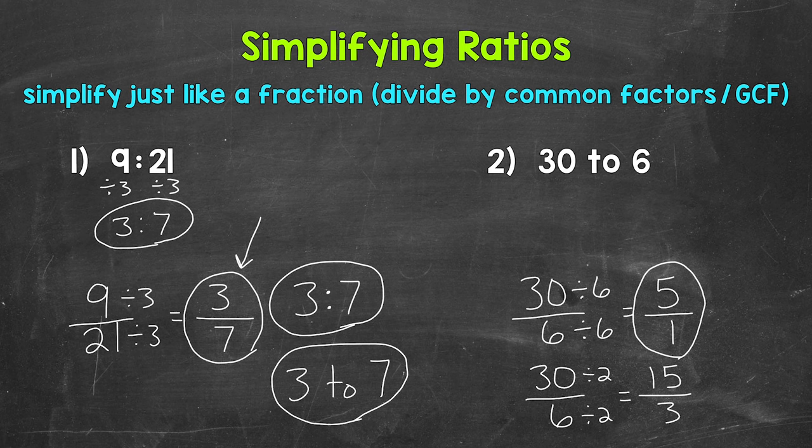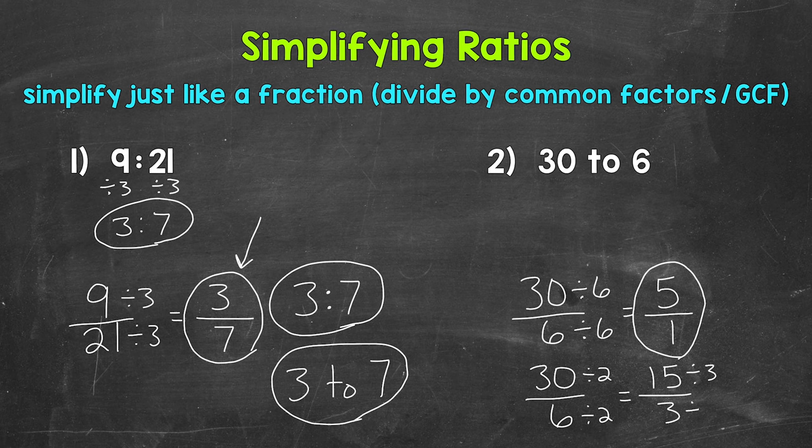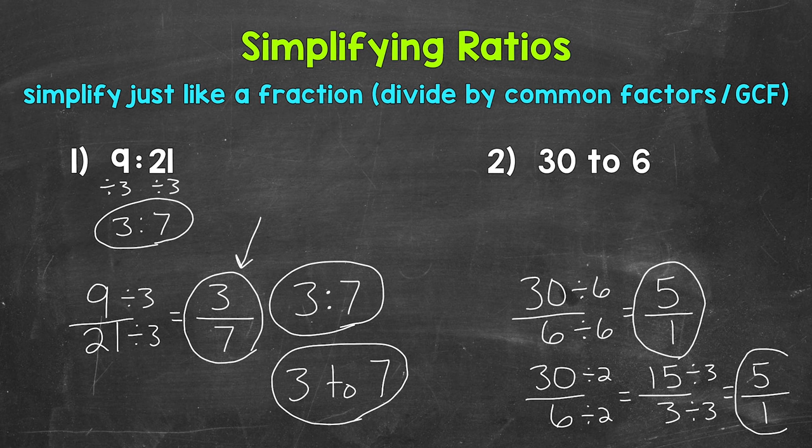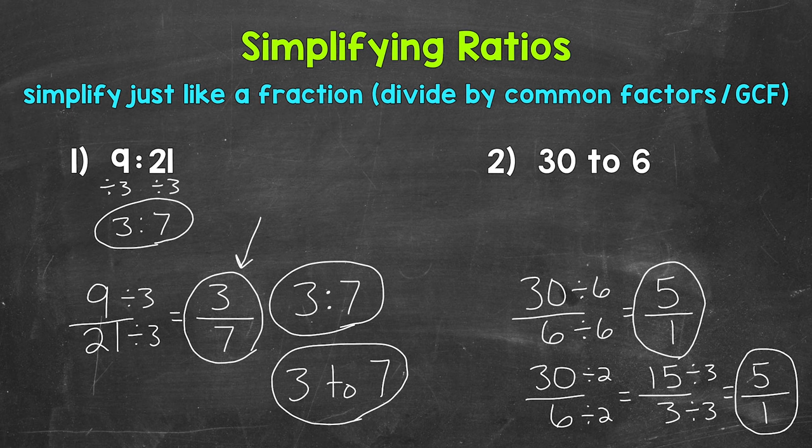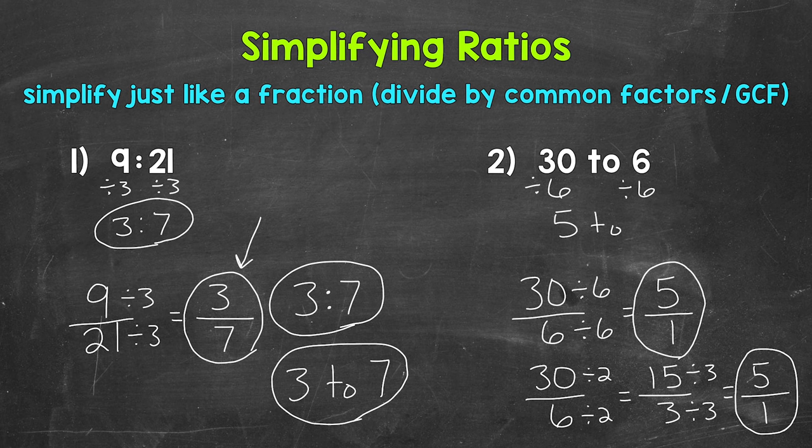Well, 3 is a common factor between 15 and 3. So let's divide 15 by 3 and 3 by 3. 15 divided by 3 is 5. 3 divided by 3 is 1. So we ended up with 5 to 1 that way as well. So keep in mind that there can be multiple paths to simplifying a ratio, just like when we simplify fractions. And again, we can simplify from that original form. Let's divide by 6 up here as well. So 30 divided by 6 and 6 divided by 6, that gives us 5 to 1.